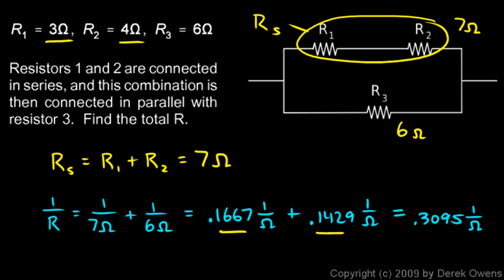Okay, that's 1 over R. So R is 1 over that. So if we just take the reciprocal of that, we end up with 3.23 ohms for our answer. And we would have gotten the same answer if we had worked out this math here using fractions and a common denominator as well.